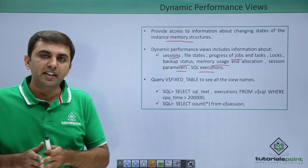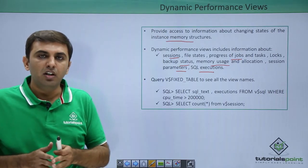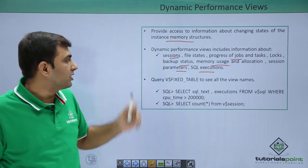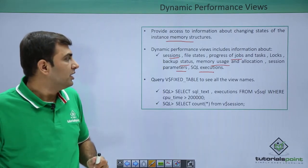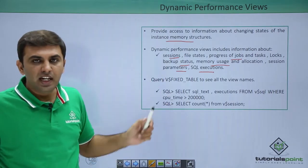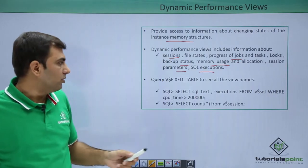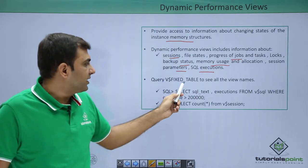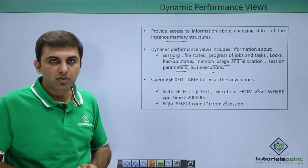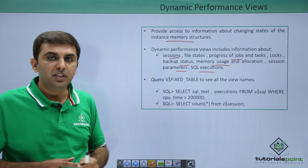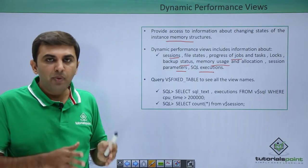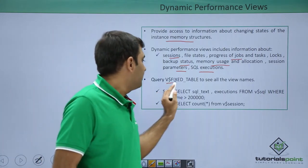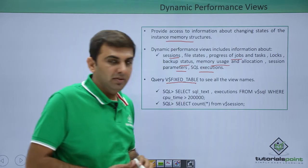How many sessions are connected at this moment versus later — all this information you can collect from the v$session dynamic performance view. You can query the v$fixed_tables to see all the view names. If you want to see how many dynamic performance views we have, you can check it from the v$fixed_tables.